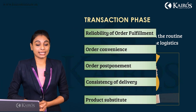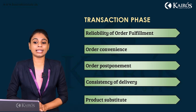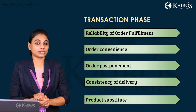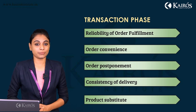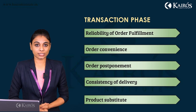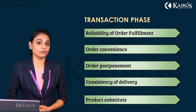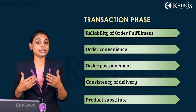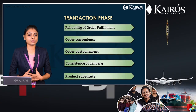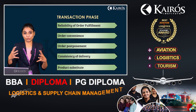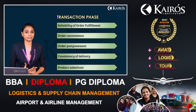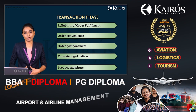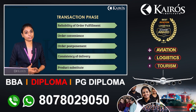The first element in the transaction phase is the reliability of order fulfillment. The company has to be reliable and trustworthy. If a customer has already ordered and paid for a product but the order is not fulfilled, the company loses its credibility. The customer becomes dissatisfied, starts complaining, and without proper communication, the customer is lost forever. So there must be reliability in order fulfillment.